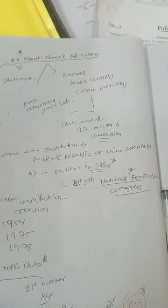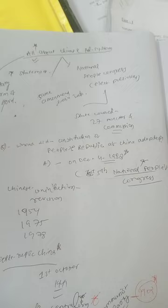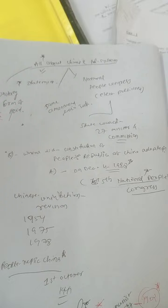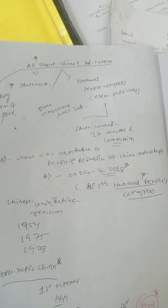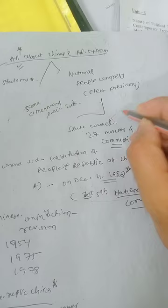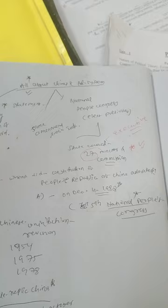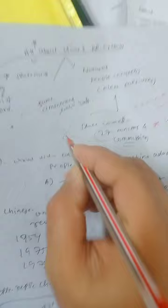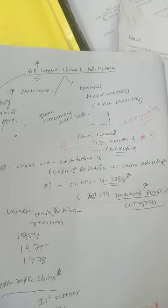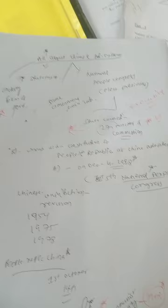The President of China is basically elected by the National People's Congress. The National People's Congress elects the President of China. The National People's Congress has a State Council, which is the executive body. The State Council consists of 27 ministers — this is an important question: there are 27 ministers in the commission.